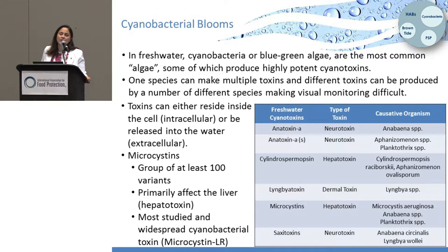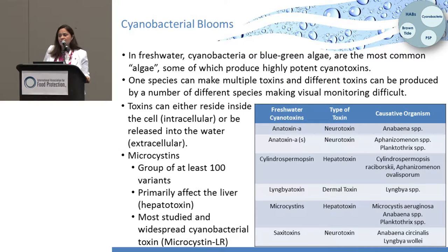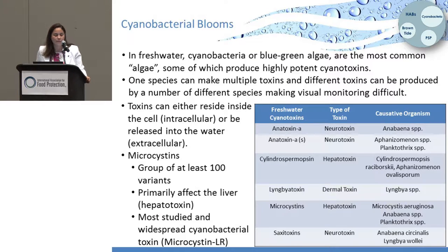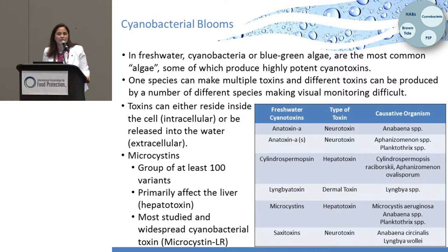We have around 100 congeners of microcystins — different types of congeners. Microcystin is a hepatotoxin, so it affects the liver. The most studied and widespread is microcystin-LR.